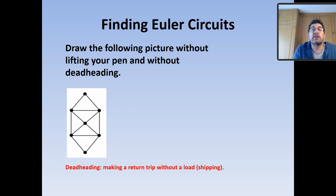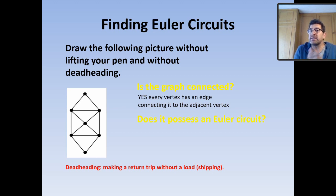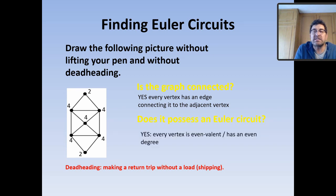Let's ask ourselves the two questions. Is this graph connected? Yes it is — every vertex is connected to an adjacent vertex by an edge. Thus it possesses an Euler circuit. We've established connectedness, the first condition. Now we look at the valence of each vertex: two vertices have even valence of 2, and the other four vertices each have a valence of 4. Therefore all vertices are even valenced, so yes, it does possess an Eulerian circuit.